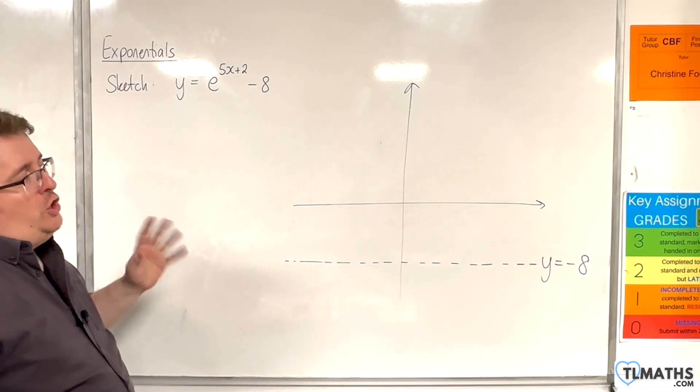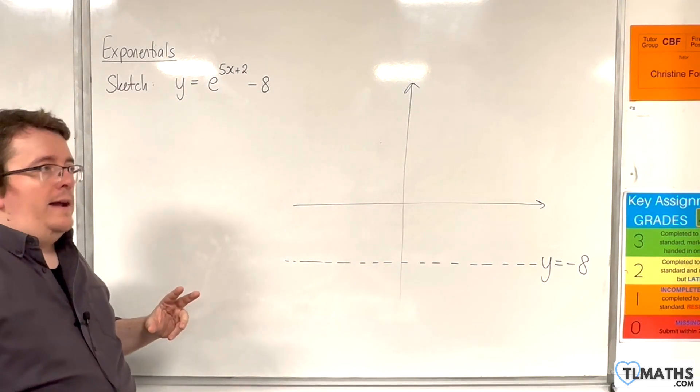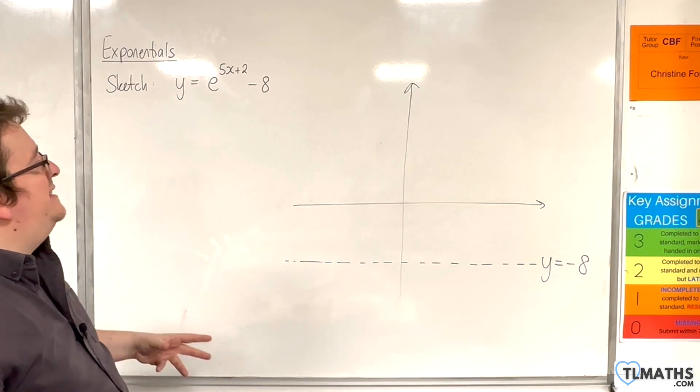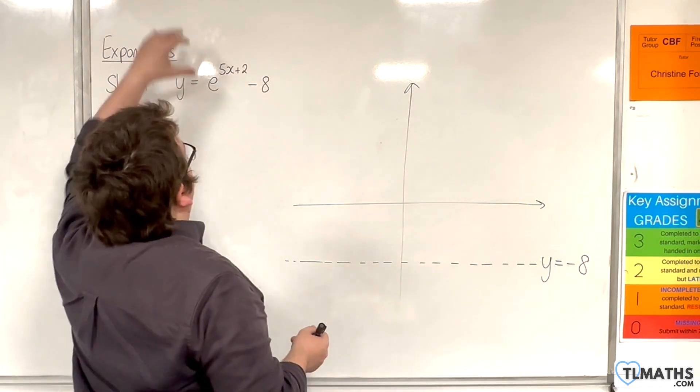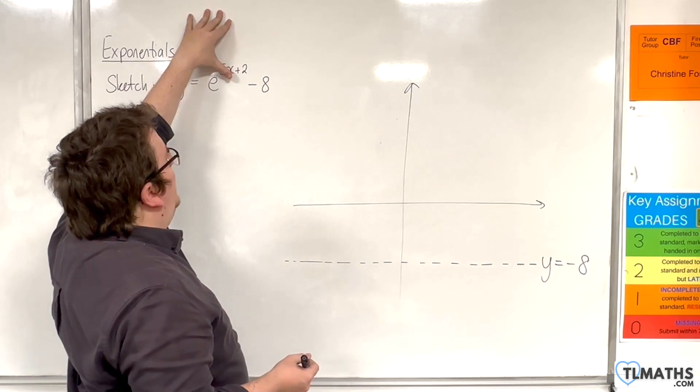Now, you'll want to check where this one crosses the y-axis by substituting in x is 0 first. So when x is 0, we're going to have e to the 2 take away 8.